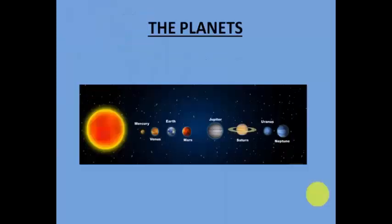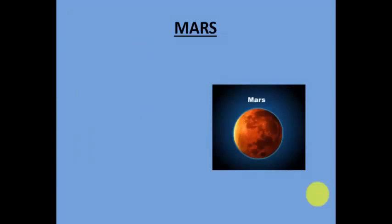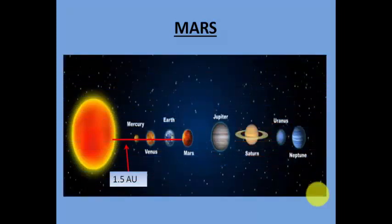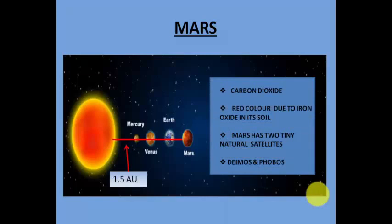Mars is called a red planet because it looks red in color. The distance between the Sun and Mars is 1.5 astronomical units. Mars contains a lot of carbon dioxide, and it is red in color due to the presence of an abundance of iron oxide in its soil.